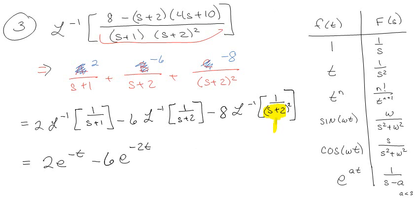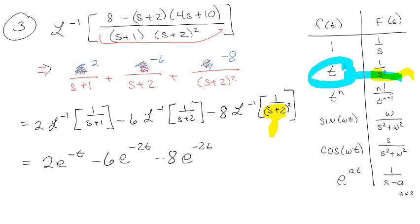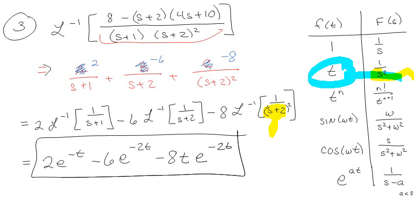Now notice here, this is s plus 2, so it's shifted. From our shifting theory, the minus 8 term is shifted, so I go e^(-2t), but it's just the inverse Laplace of t by itself. So actually it's minus 8t times e^(-2t), because the inverse Laplace of 1 over s² is just t, but then it's shifted by 2, giving e^(-2t). That's a somewhat tricky part of that one.